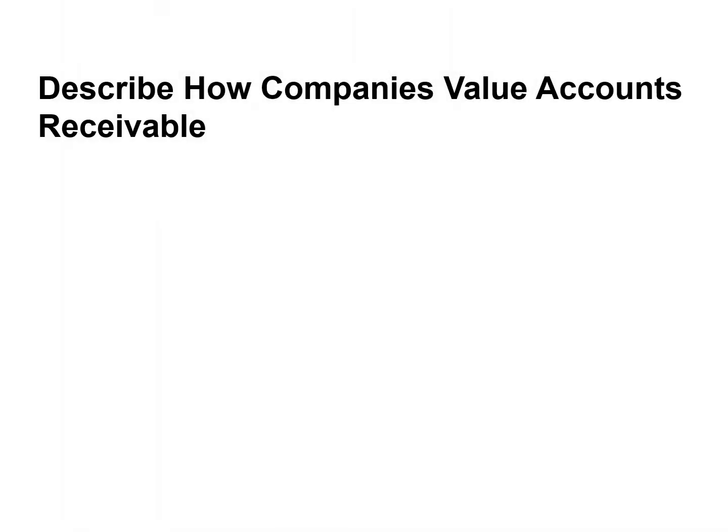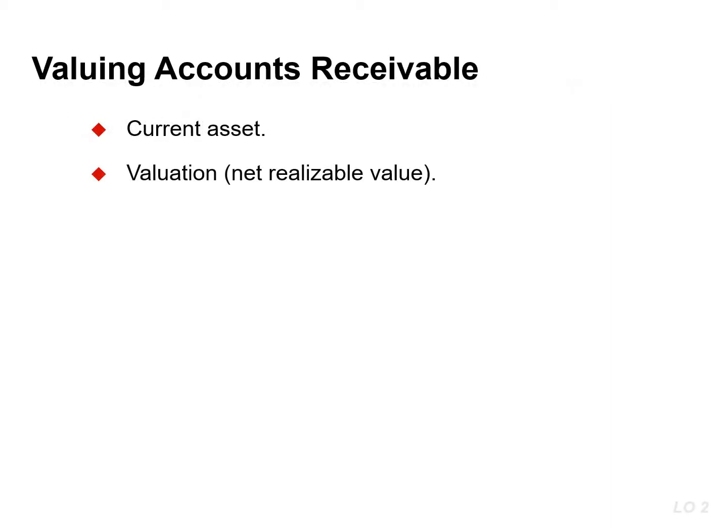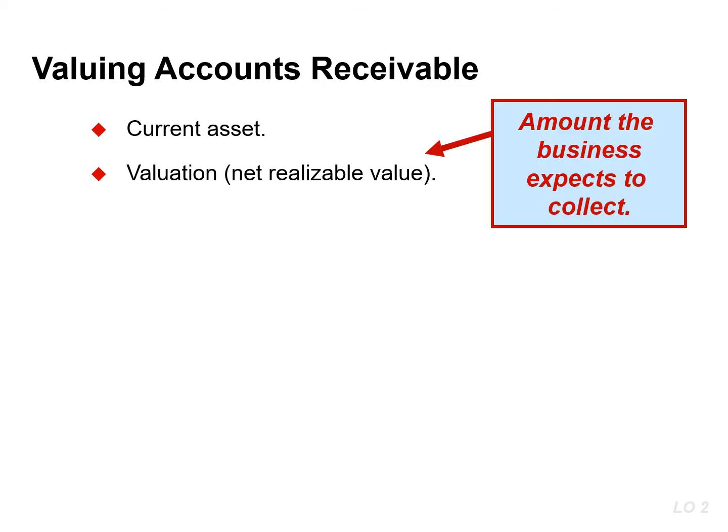Once companies record receivables, the next question is how should they report them in the financial statements? This video will discuss how we value accounts receivable. Companies report accounts receivable on the balance sheet as an asset at the net realizable value, which represents the amount the company expects to collect in cash. Determining the amount to report is sometimes difficult because some receivables will become uncollectible.